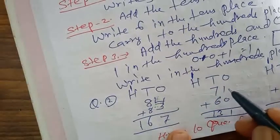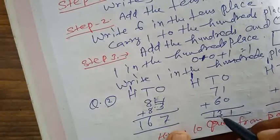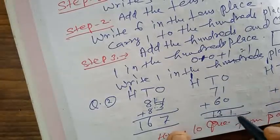Question number 3: 76 plus 33. 6 plus 3 equals 9. 7 plus 3 equals 10, carry 1. The answer is 109.